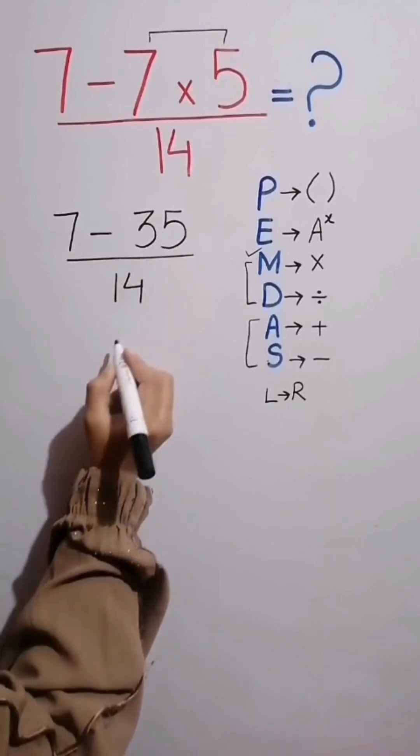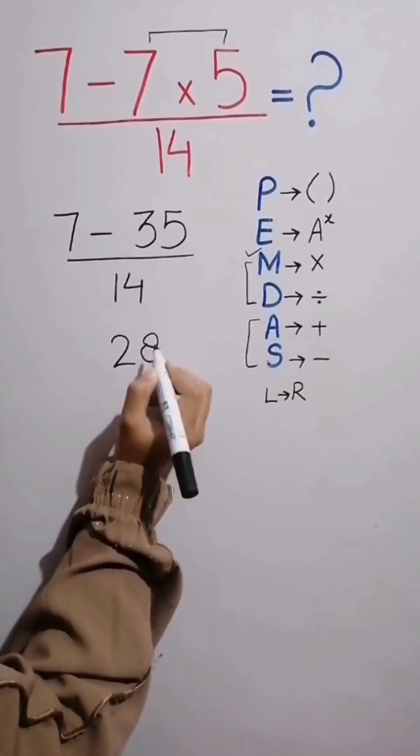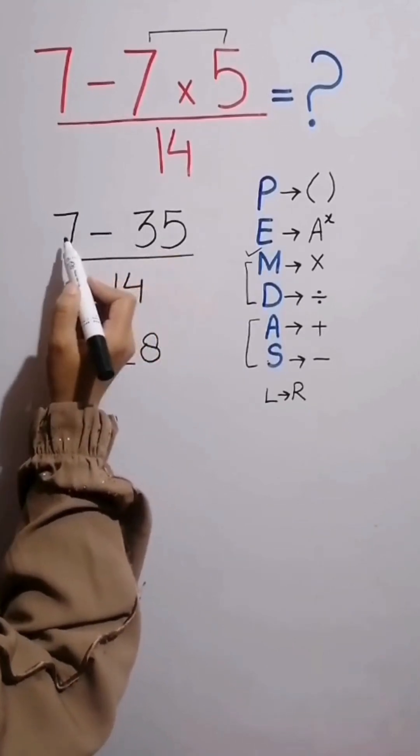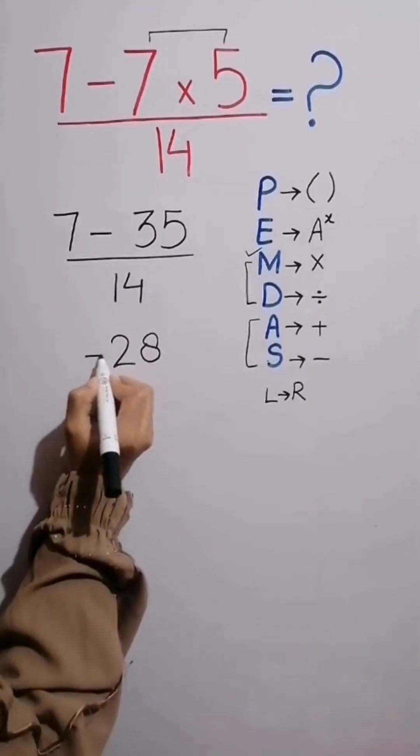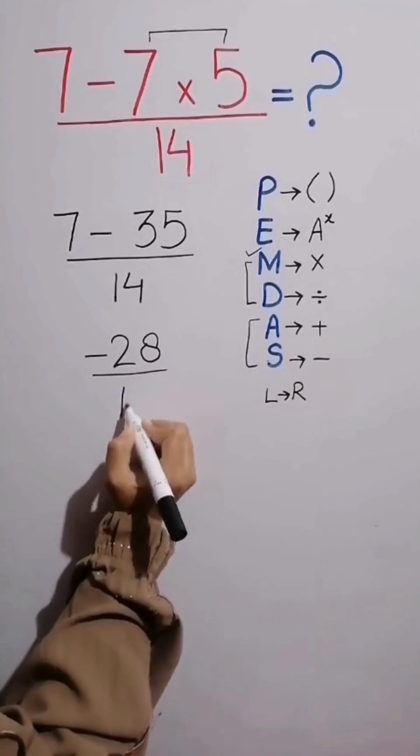7 minus 35 equals negative 28. As 35 is bigger than 7, and the greater value has a negative sign, the answer goes negative: minus 28. Then over 14.